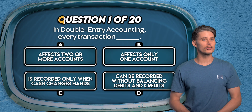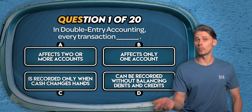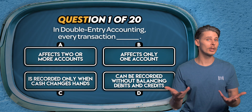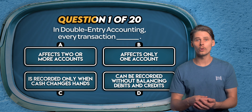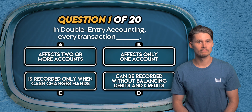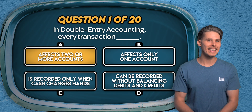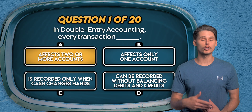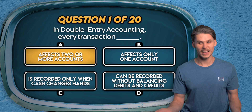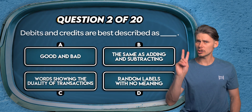Question 1. In double entry accounting, every transaction: affects two or more accounts, affects only one account, is recorded only when cash changes hands, or can be recorded without balancing debits and credits? The answer is A. In double entry accounting there are two equal and opposite sides to every transaction. This ensures that the accounting equation is kept in balance.